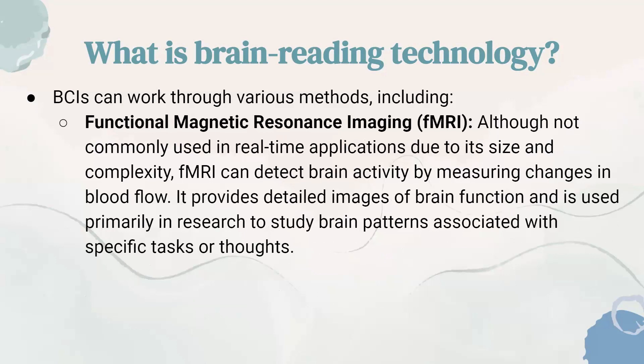Another method would be functional magnetic resonance imaging, or fMRI. Although not commonly used in real-time applications due to its size and complexity, fMRI can detect brain activity by measuring changes in blood flow. It provides detailed images of brain function and is used primarily in research to study brain patterns associated with specific tasks or thoughts.